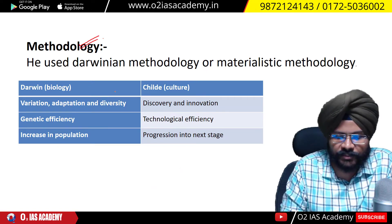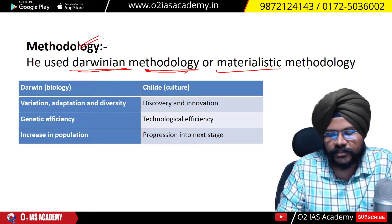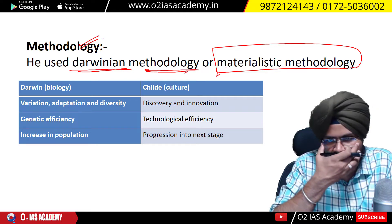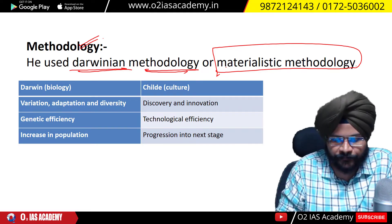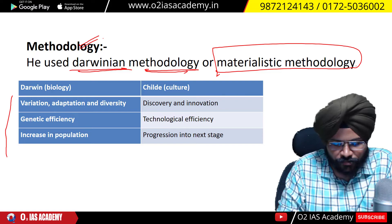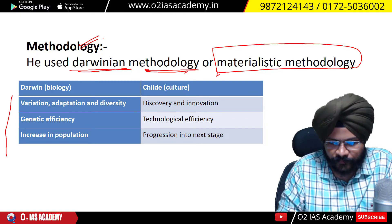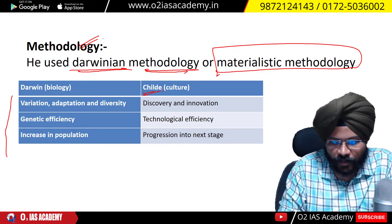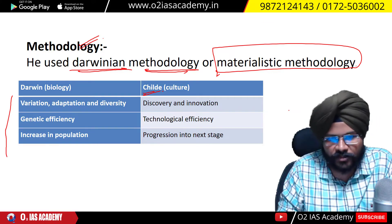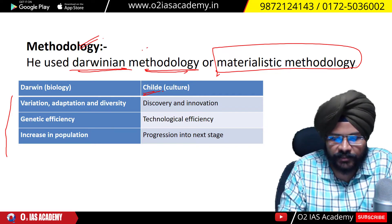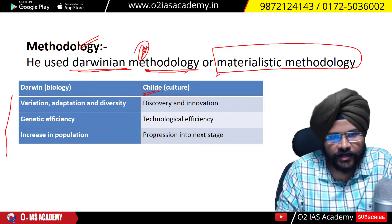The methodology used is the Darwinian methodology, or materialistic methodology. What G.V. Childe did was he studied Darwinism and applied it to culture — how the biology of Darwinism can be changed into the cultural approach. This is called the Darwinian methodology.